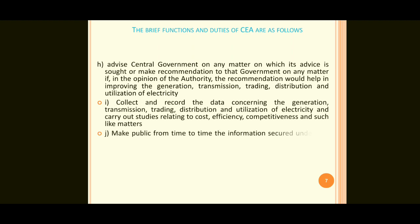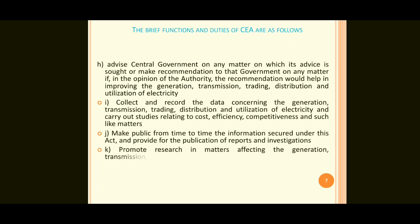Point J: make public from time to time the information secured under this act and provide for the publication of reports and investigations. Continuous research is ongoing. Point K: promote research on matters affecting the generation, transmission and trading of electricity. Journals are maintained to track recent research trends in efficiency, generation, transmission and distribution of electricity.